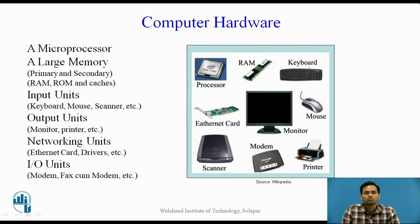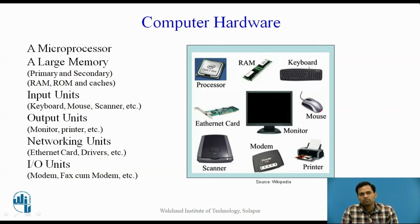Output units like monitor and printer are used — whatever inputs are given to the computer system, it works according to those inputs and generates outputs to the monitor or printers. The computer hardware also uses networking units such as Ethernet card and drivers, and IO units such as modem and fax modem units.